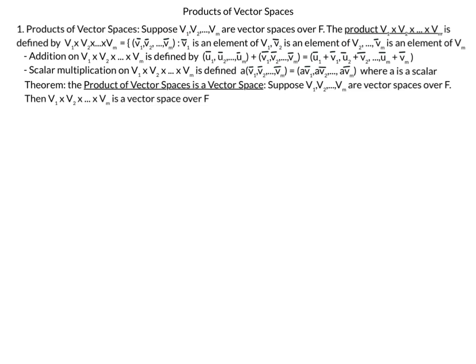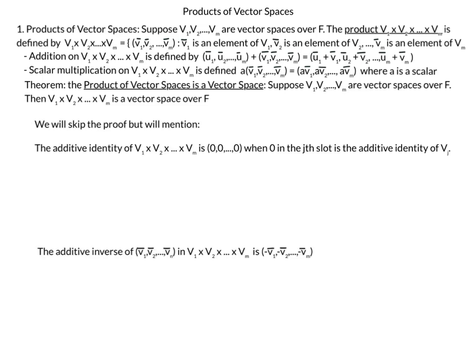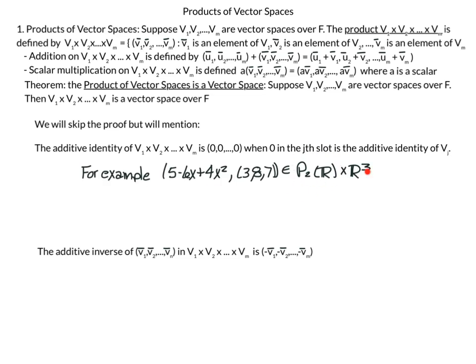Now that we have the definition of the product of vector spaces with addition and scalar multiplication defined, we have this theorem that the product of vector spaces is itself a vector space. Suppose V1, V2 up to Vm are vector spaces over some field F, then V1 cross V2 cross up to Vm is a vector space over F. We'll skip the proof here, but note that the additive identity of our product of vector spaces is the zero, where the zero in the j-th slot is the additive identity of the j-th vector space.